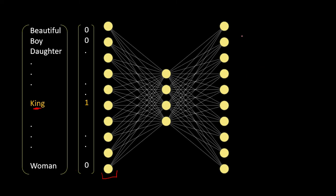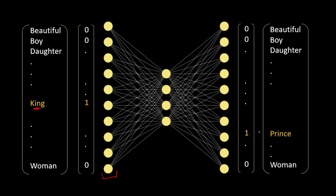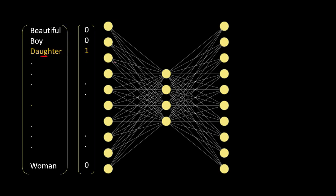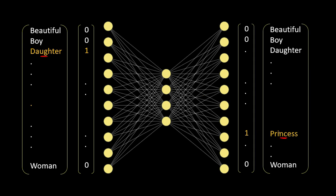Based on this input word the model will try to make an output prediction. Before training, the model does not know what the output should be, so it might predict any word. That prediction is then compared with the actual output label — say, 'prince.' We tell the model that the actual output for the word 'king' should have been 'prince,' so adjust your weights via backpropagation. Similarly, if we pass the word 'daughter,' we make the model predict 'princess' as output, and backpropagation adjusts weights accordingly.